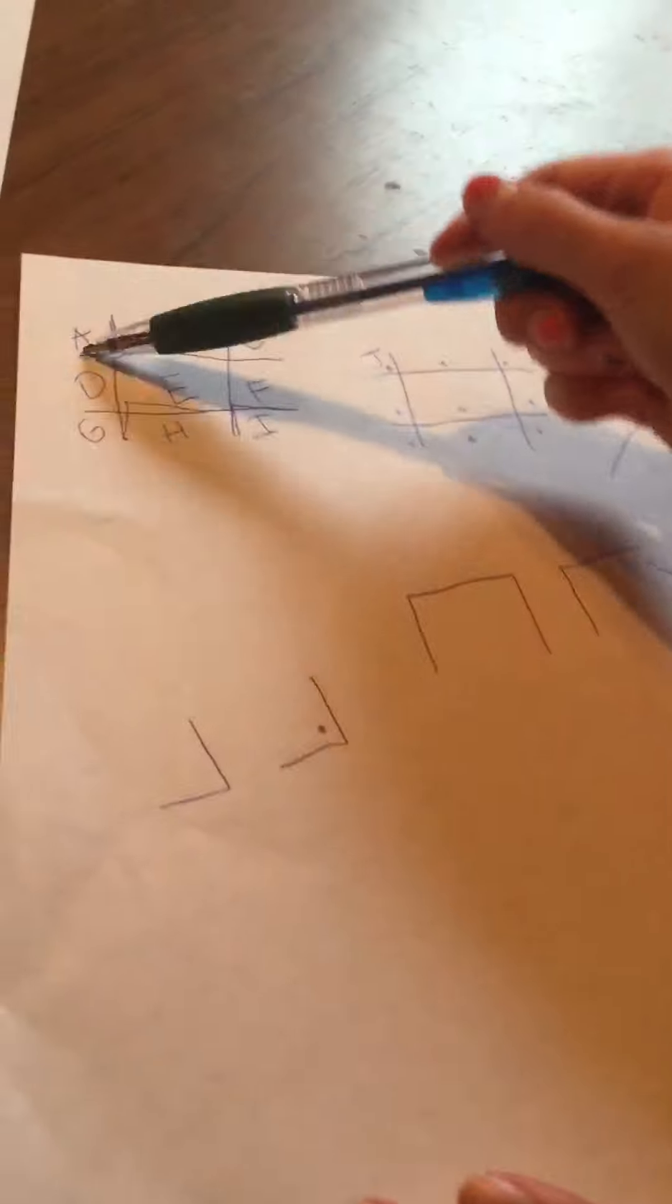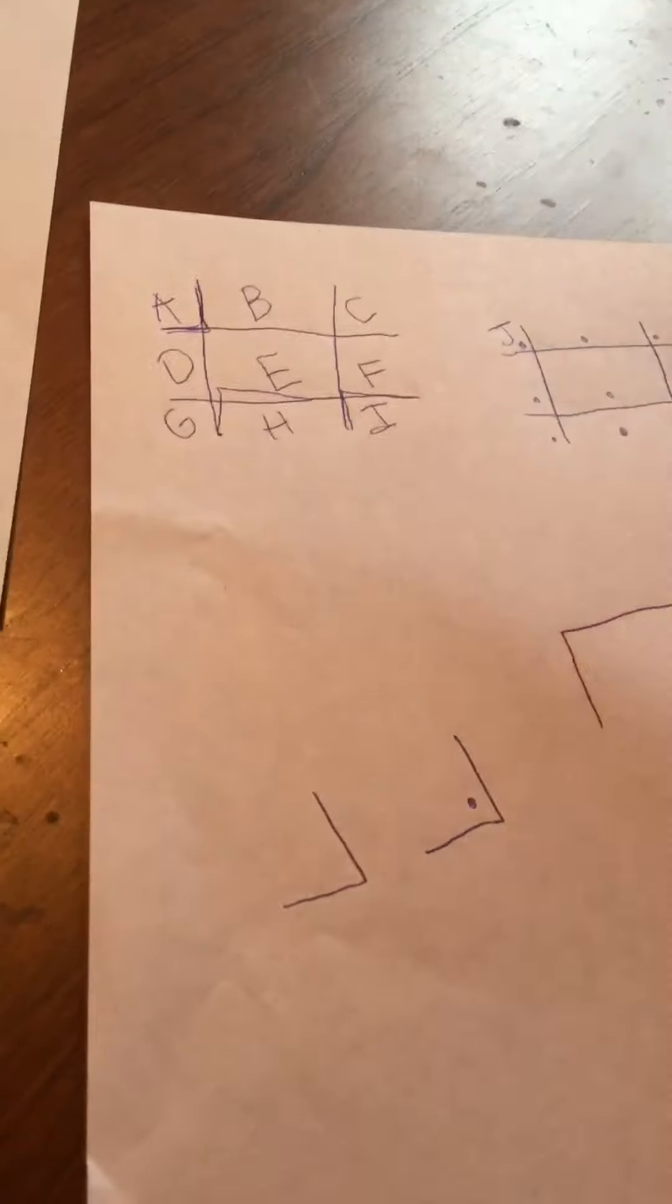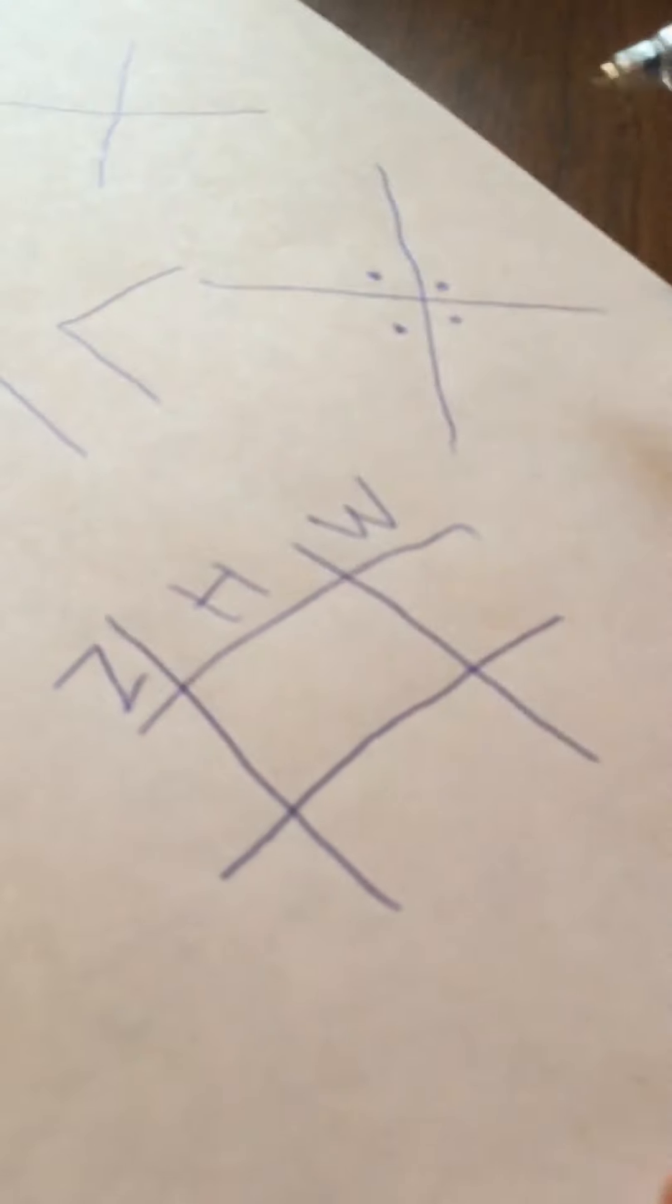Now an easy way to do it is doing A, B, C, D, E, F, G. But I could also do, in another one, I could do Z, H, W, etc. So that's how you make a really cool pig pen cipher.